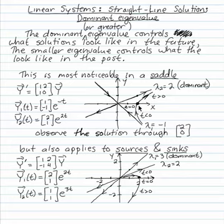But if I pick a point like (2, 0) over here on the positive x-axis, as time goes forward, that solution should be absorbed into the dominant solution. And as time retreats into the past, it's as if that solution was emanating from the decaying solution, from the weaker solution.